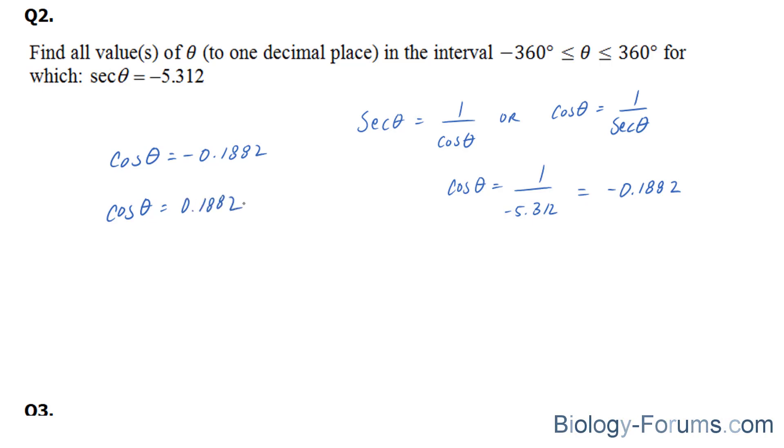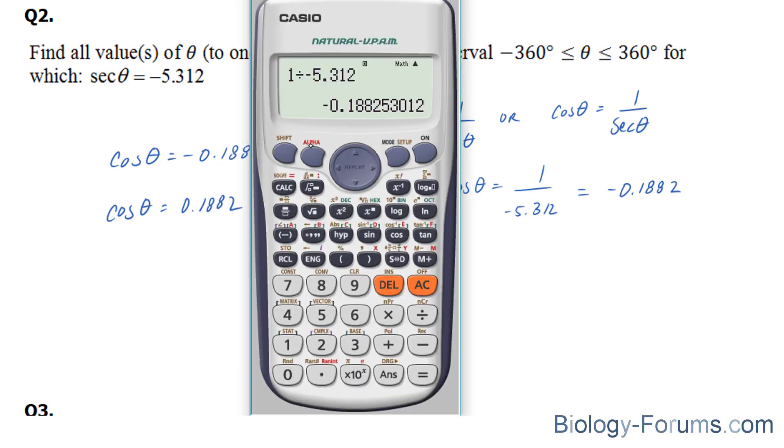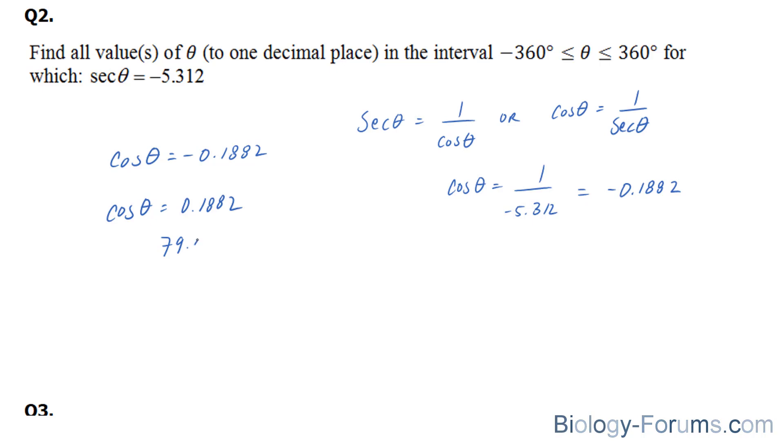We will find the angle that represents that using inverse cosine. Inverse cosine of 0.1882 is 79.15 degrees.